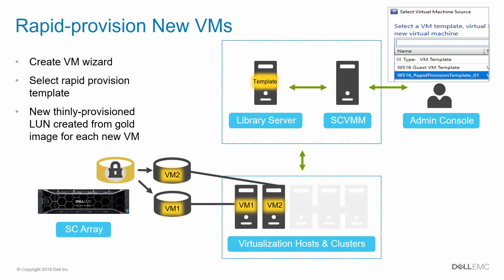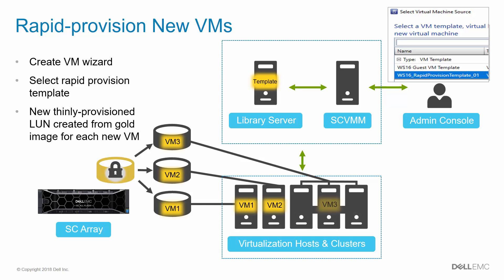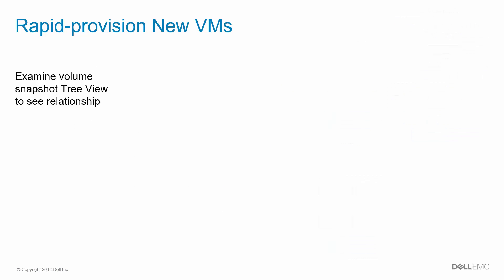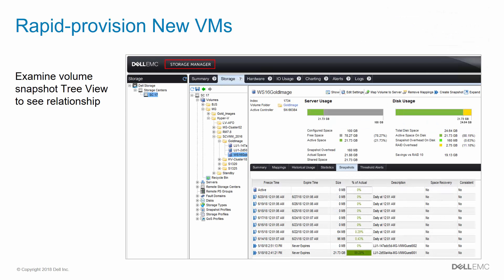As before, the new LUN consumes no space initially. Deploying rapid provisioned VMs to standalone hosts or clusters is supported, as shown here with VM3. Use the Dell Storage Manager client if you want to view the relationship between the gold source volume and volumes provisioned from the gold source.